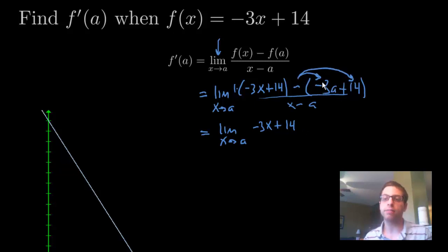So now, instead of -3a, it's going to be a positive 3a, and then a -14, all over x - a.